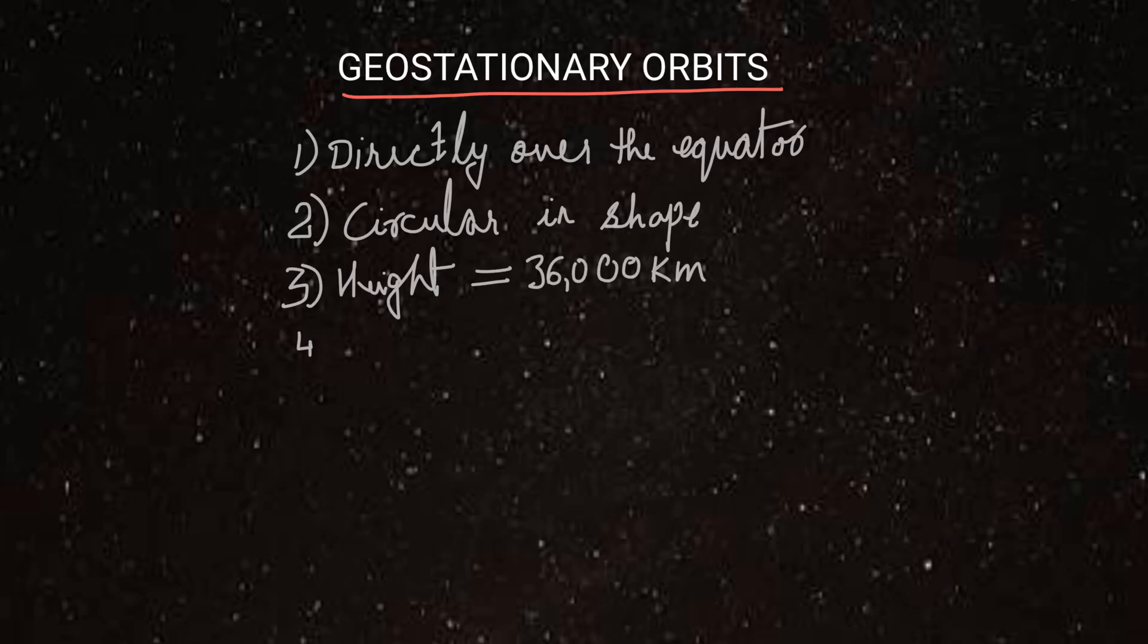Then they move west to east, same as the direction of rotation of earth. And the most important thing is that their speed is the same as that of the speed of earth. So the satellite's angular velocity is equal to earth's angular velocity. And therefore, one revolution of satellite is approximately equal to one day, twenty-four hours approximately for the satellite to complete one round around earth.